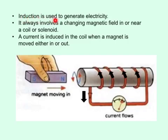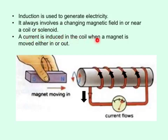Induction is used to generate electricity. It always involves a changing magnetic field in or near a coil or solenoid — a solenoid is simply a long coil. A current is induced in the coil when a magnet is moved either in or out of the coil, as this diagram illustrates. This magnet is being moved into the coil, and as a result, current is induced in the coil.